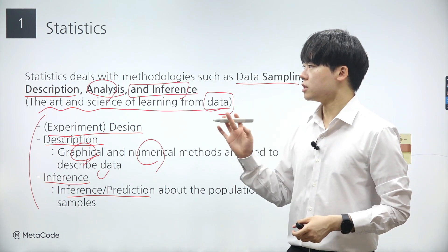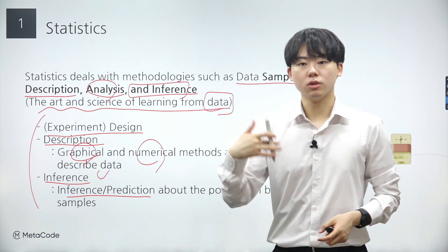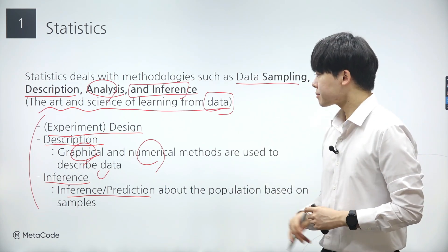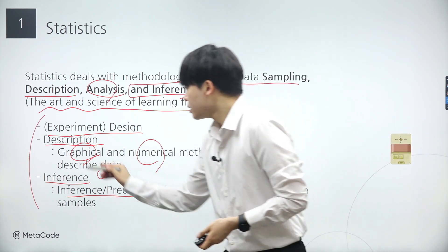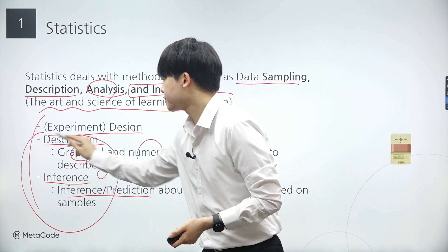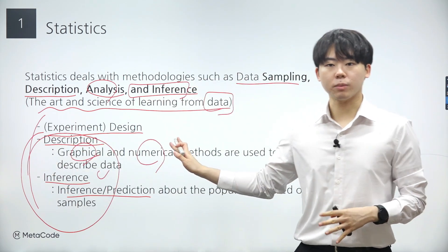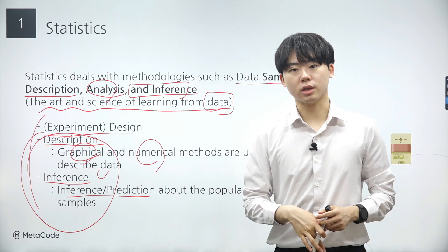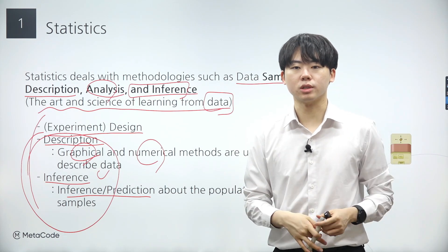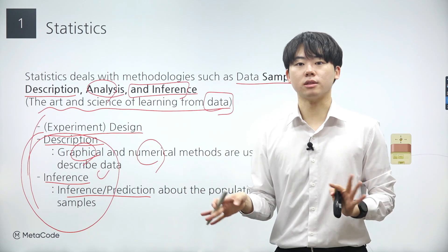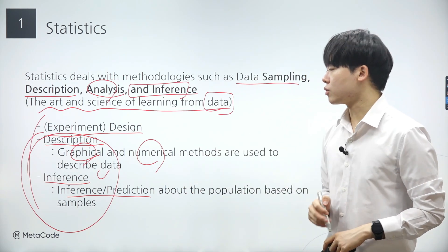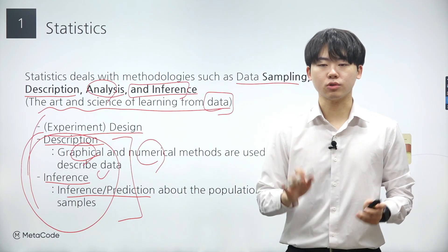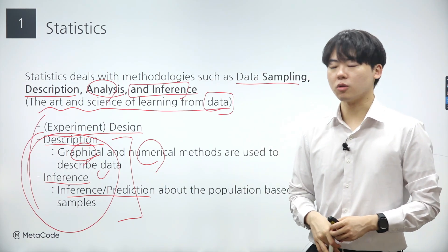Throughout this lecture, rather than attempting to cover every aspect of statistics, our main focus will be on these two crucial subcategories: data description and inference. We won't delve into other areas such as experiment design, the Bayesian approach, or categorical data analysis for this course. By the end of this course, you'll possess a strong foundational understanding of these two categories at a basic level.